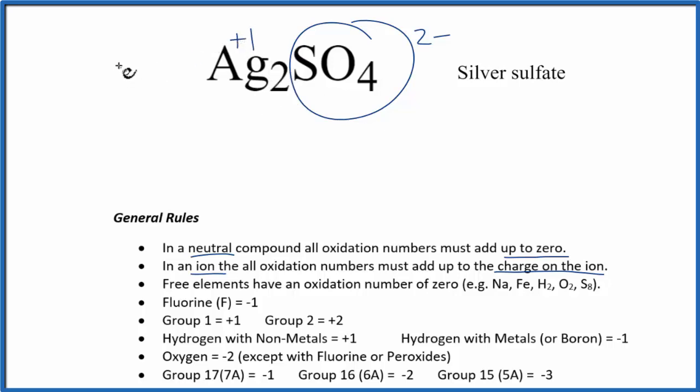Two times plus one, that gives me a plus two, and these will cancel out, give us a total net charge of zero. So the silver, each one of the silvers here is plus one. Let's clean this up a little bit.